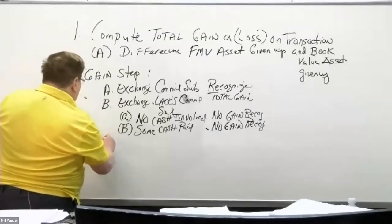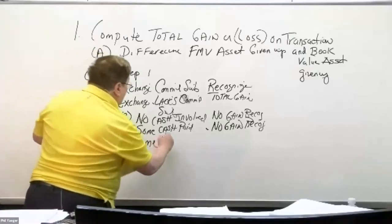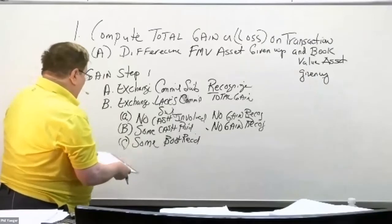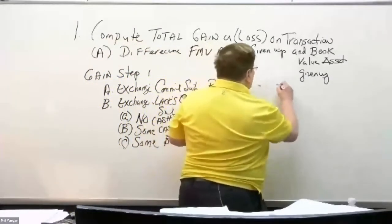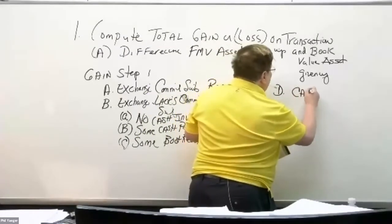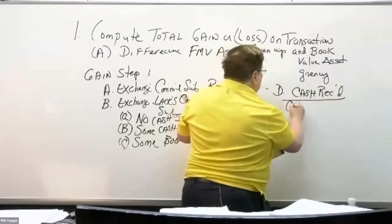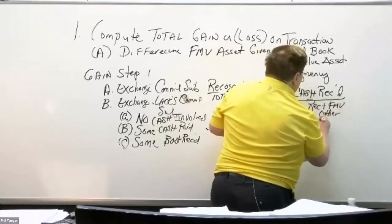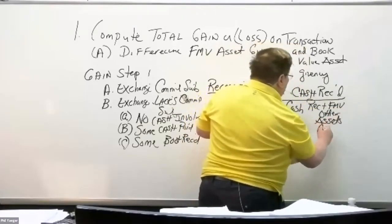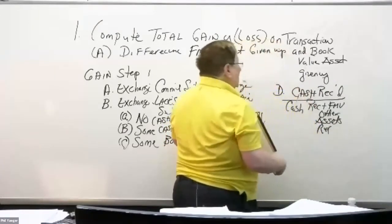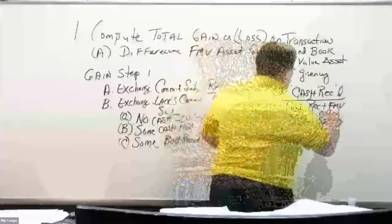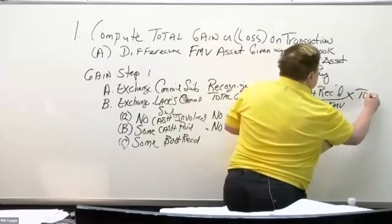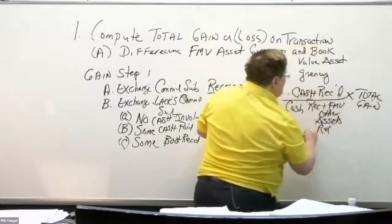If you receive some cash — or what they call boot received — you'll take the following formula: cash received over the cash received plus any fair market value of other assets received. This is a proration. You multiply this by the total gain, and this will be the gain recognized.